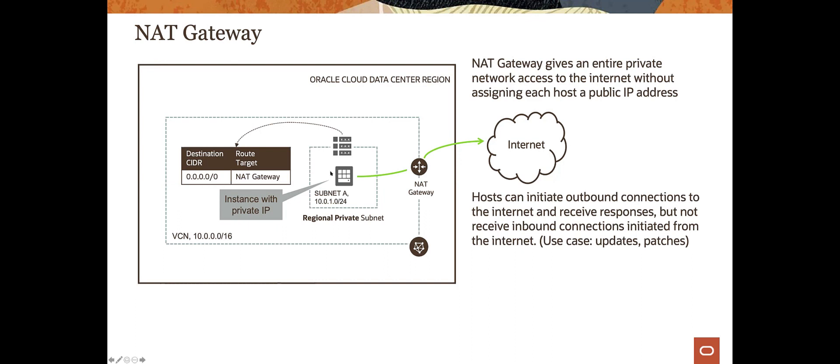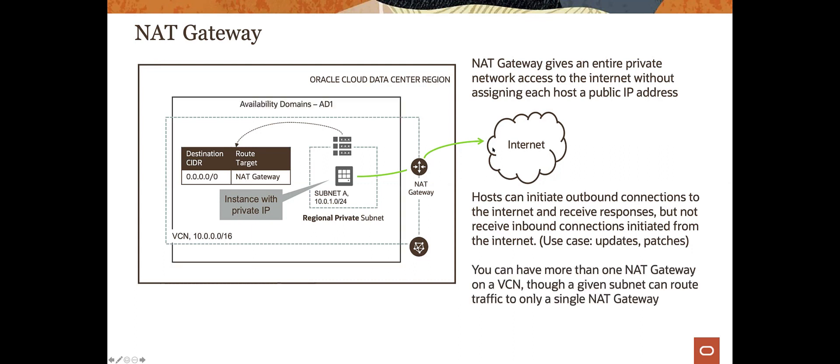The route table for a NAT gateway looks very similar to before — all traffic is routed straight to the NAT gateway, which then provides the next hop. You can have more than one NAT gateway on a VCN, though a given subnet can route traffic to only a single NAT gateway.